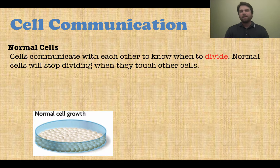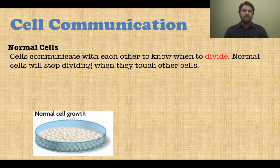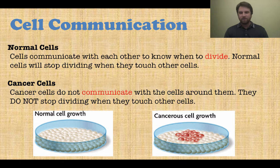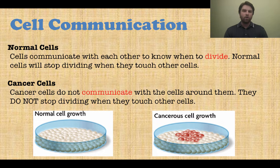Next is cell communication. Normally, cells communicate with adjacent cells — when dividing, they may touch neighboring cells and communicate through contact. They figure out there's not enough room and stop dividing. Cancer cells are different: they don't communicate with surrounding cells and don't stop dividing when they touch others. They overgrow, grow on top of, or keep going with no regard for the cells around them.